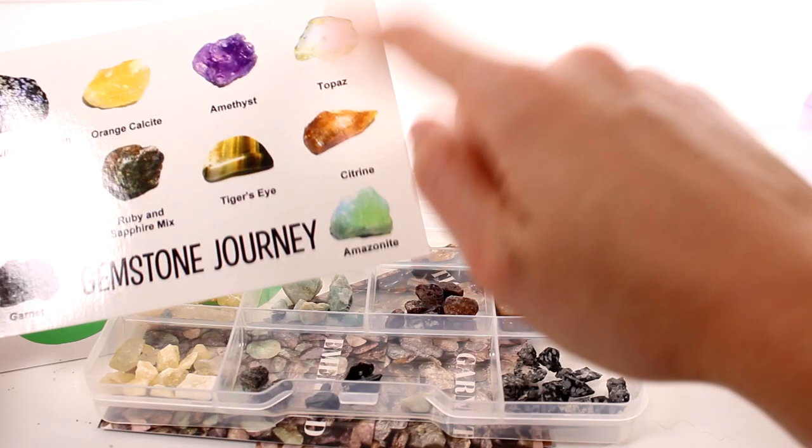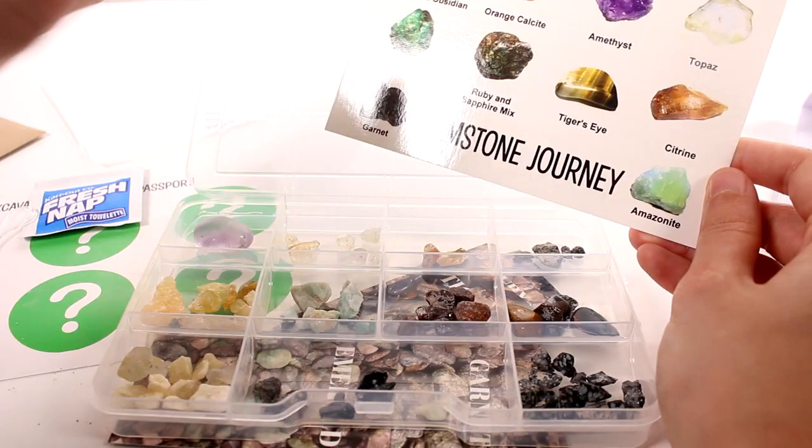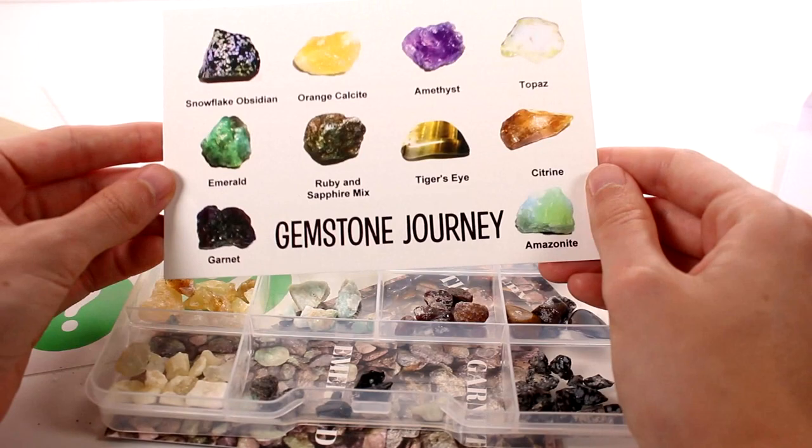Which I believe are these two different ones, I think. Unless this one, actually this one might be it, but there's also citrine. So this might be the citrine, this might be the orange calcite, and this might be the topaz. I'm not a hundred percent sure. Actually these look like they belong over here.